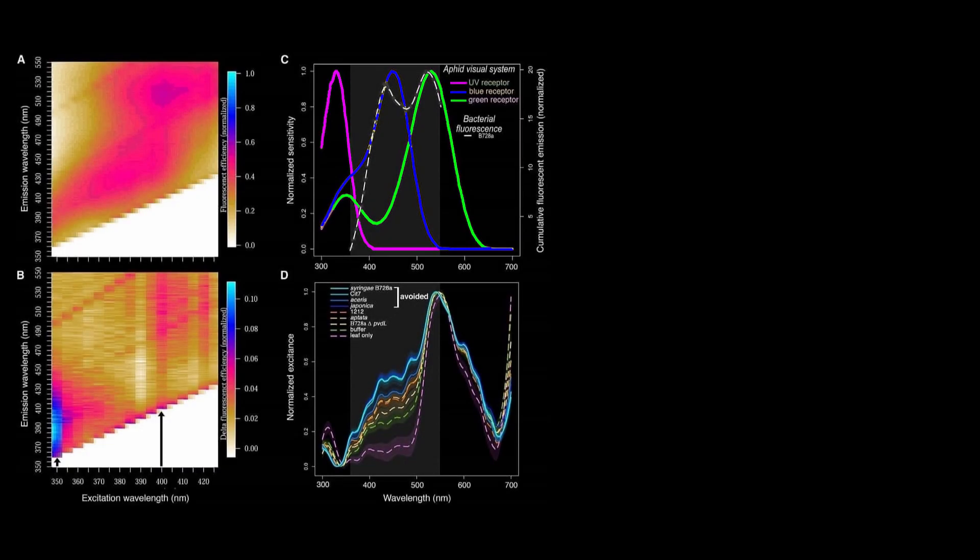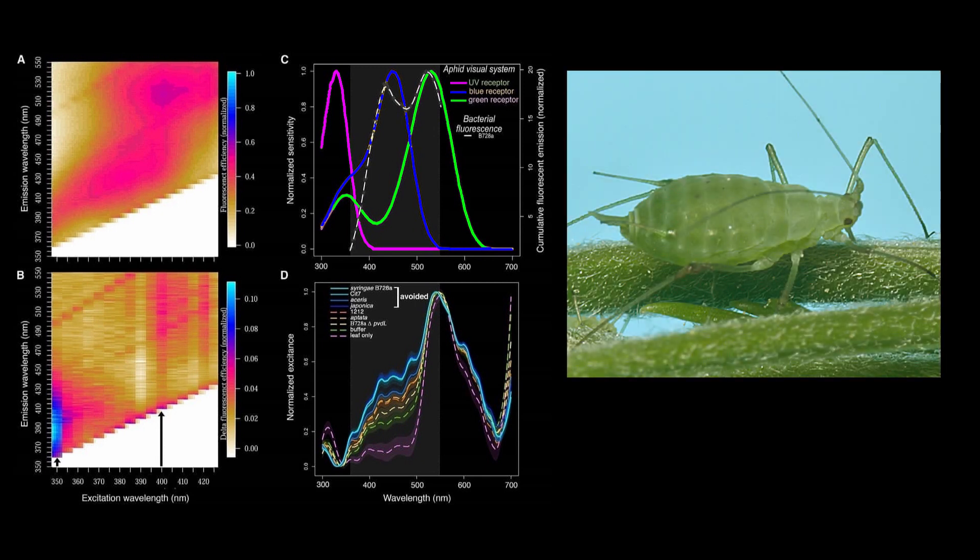Some species of aphids are susceptible to infection by epiphytic bacteria that occur on the surface of plants, such as Pseudomonas syringae. Some species, like the pea aphid Acyrthosiphon pisum, utilize visual cues from the ultraviolet fluorescence of the compound pyoverdine, and it appears that pea aphids have adapted to avoid fluorescent leaves between 350 and 550 nanometers, according to one study.